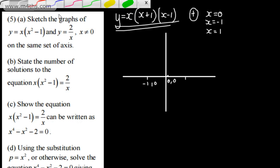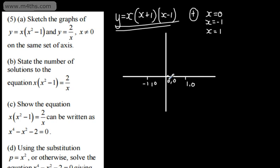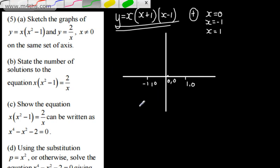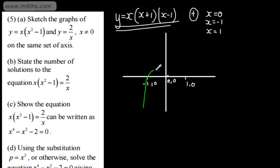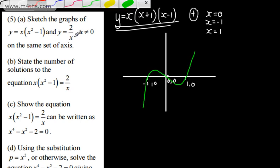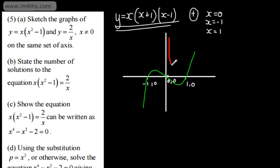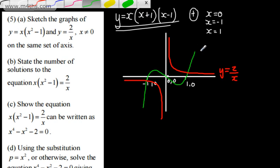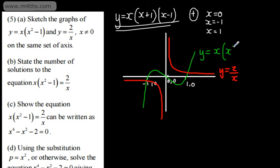So we have the points (1, 0), (-1, 0), and (0, 0) on the cubic. Since it's a positive cubic, it's going to start in the third quadrant, come round symmetrically through those points. We now need to draw y = 2/x — this is the standard reciprocal function with a scale factor stretch of 2. So we get the typical reciprocal shape. These are just sketches.